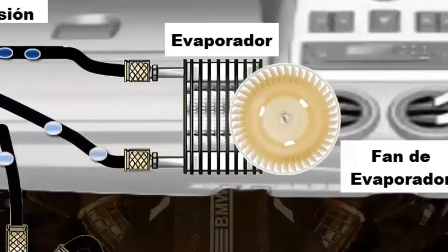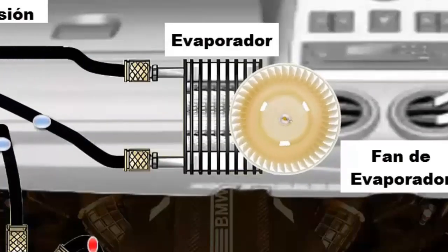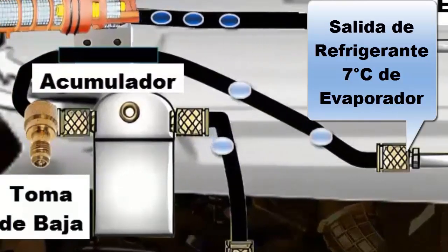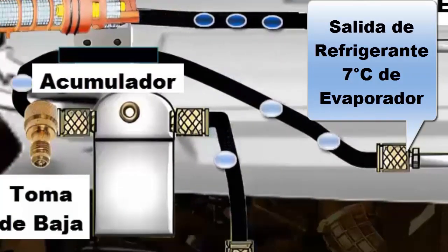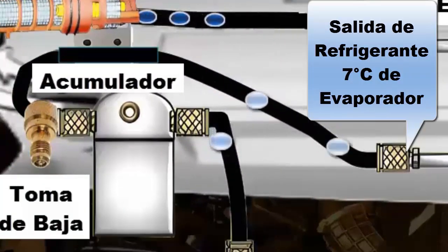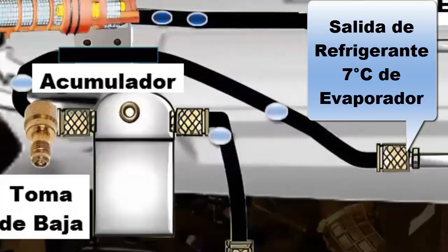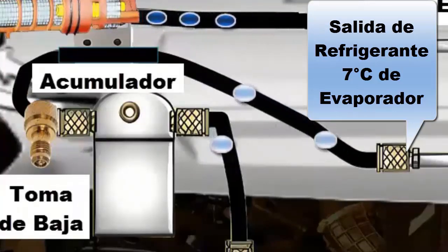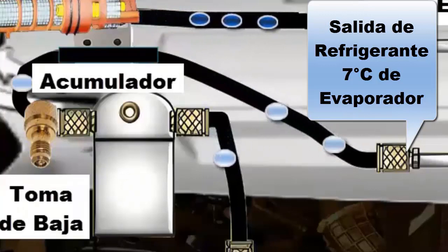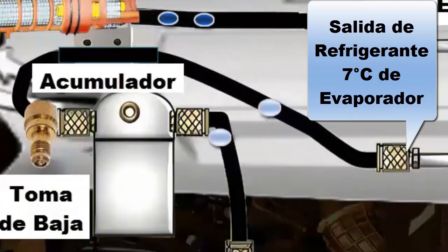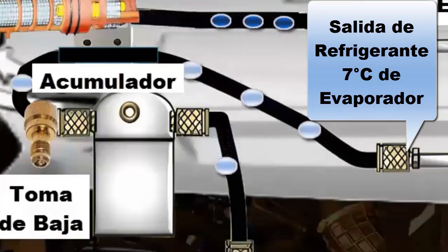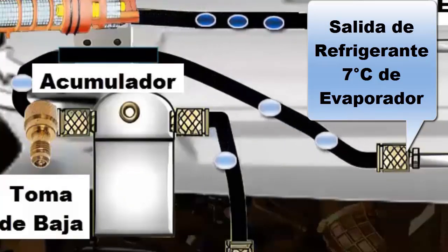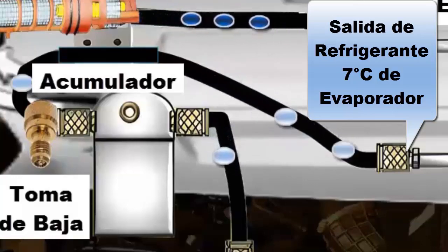After leaving the evaporator in a gaseous state, the refrigerant at 7 degrees Celsius moves to the compressor. Before reaching the compressor, it passes through the accumulator with a dryer filter, designed to clean the refrigerant and retain possible drops that haven't evaporated in the evaporator, preventing them from reaching the compressor.